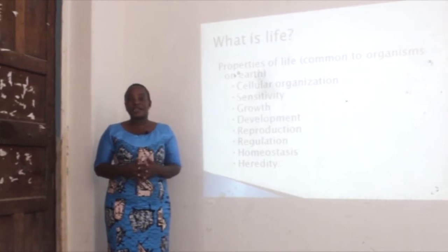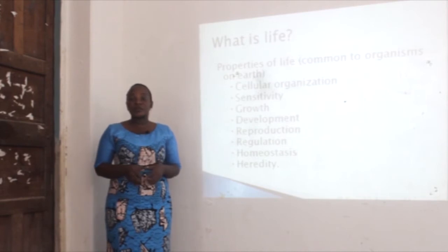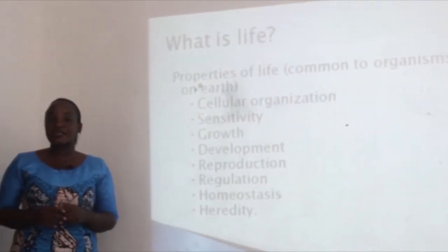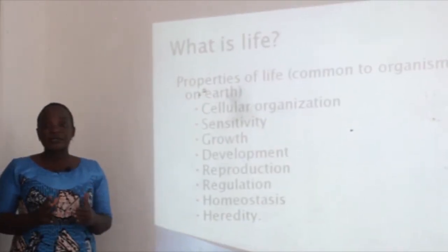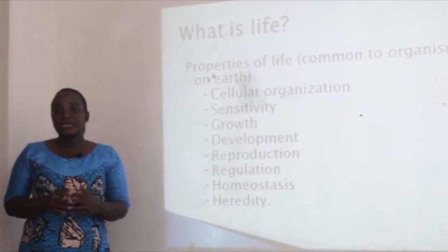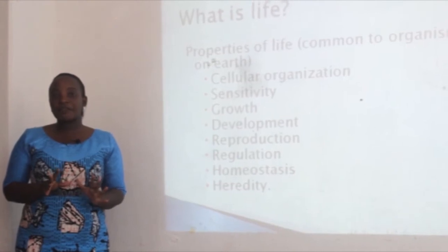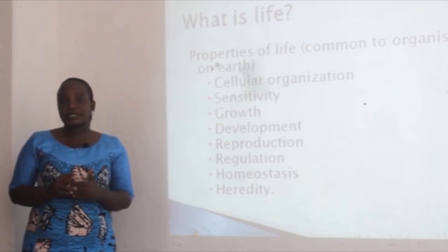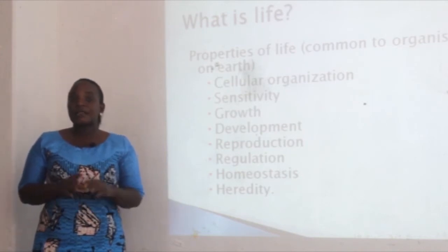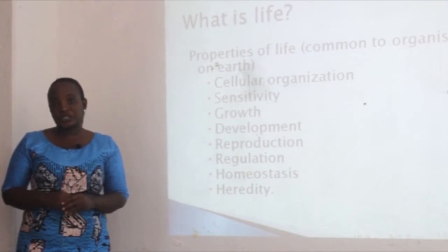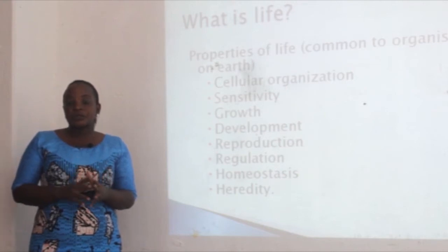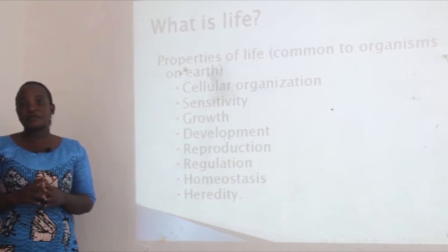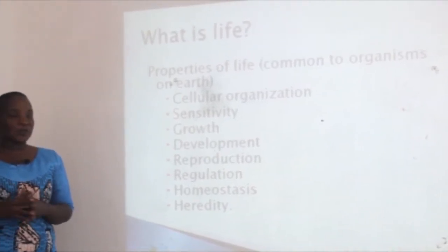The properties of life are common to all organisms on earth. The first one is cellular organization. All organisms on earth are made up of cells, and a cell is the basic unit of life. There are certain organisms made up of only one cell — these are called unicellular organisms, and all their life processes occur inside a single cell. Organisms made up of more than one cell are called multicellular organisms. In multicellular organisms, different cells are specialized to perform different functions — there is some sort of division of labor, where certain cells devote their energies to one task and other cells to another.